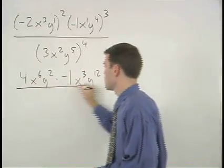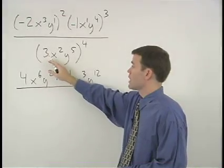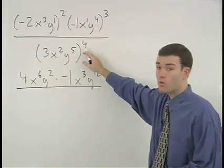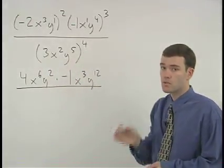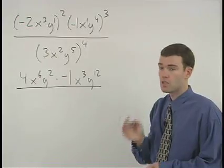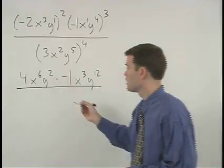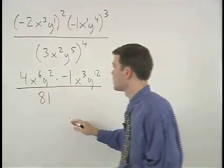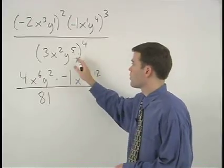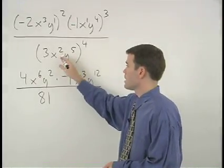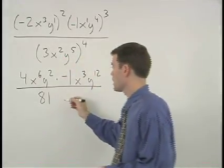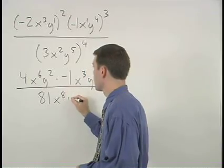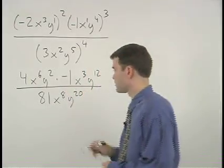In our denominator, we take our coefficient of 3 to the fourth power, which is 3 times 3 times 3 times 3, or 81, and multiply each of the exponents by 4 to get x to the 8th, y to the 20th.